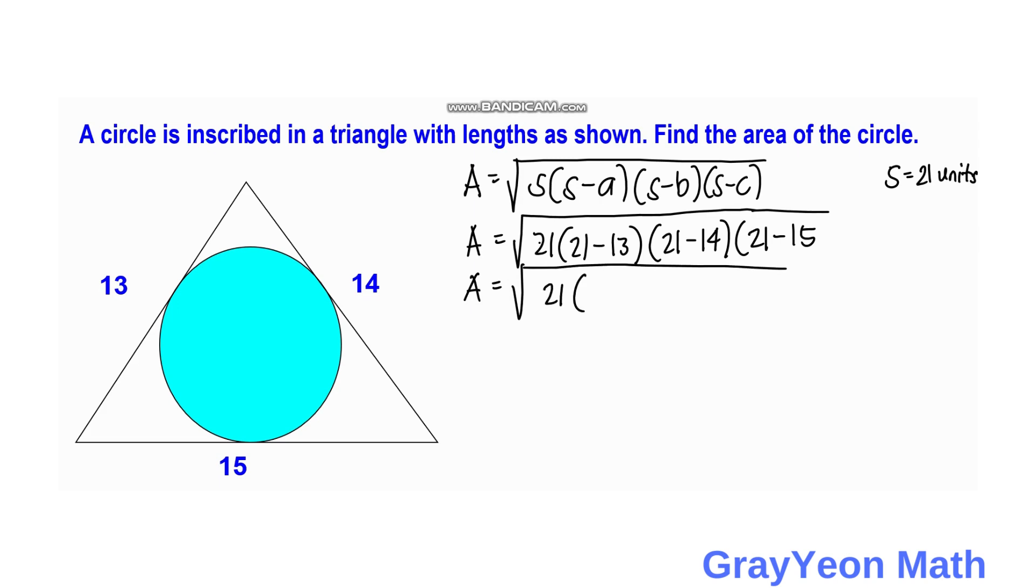21 minus 13 equals 8, and 21 minus 14 equals 7, and 21 minus 15 equals 6. We can write this as 7 times 6 equals 42.